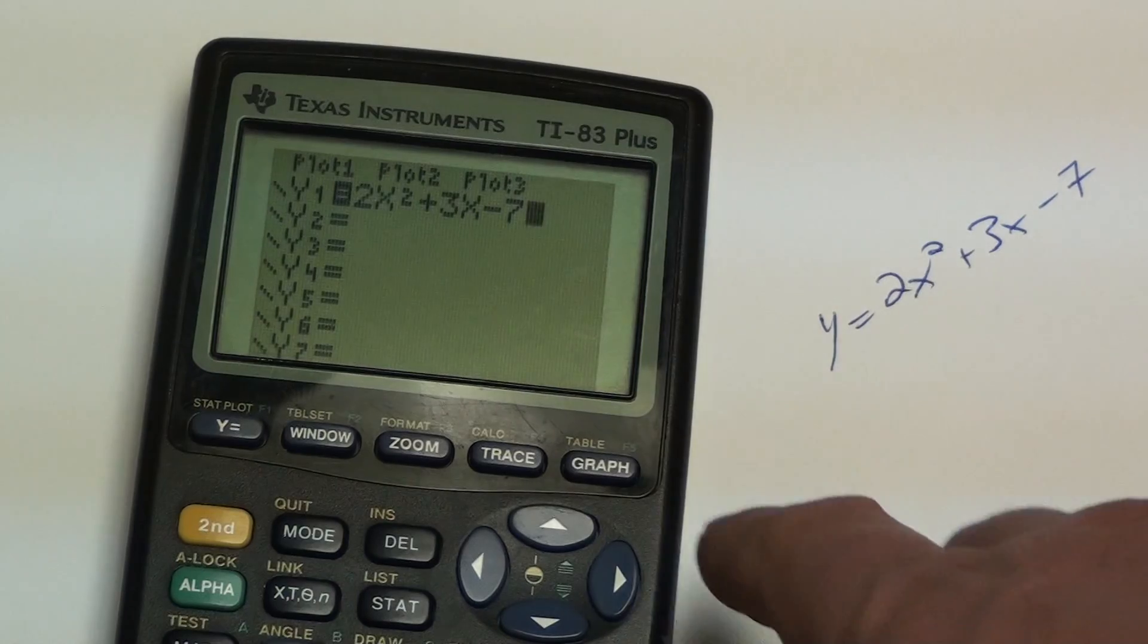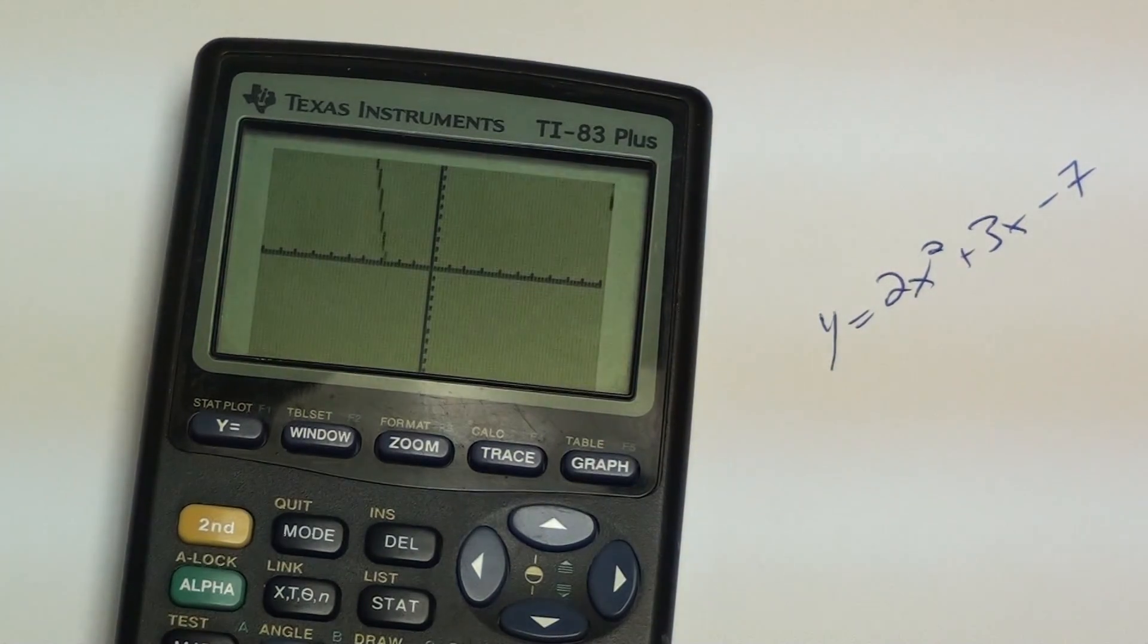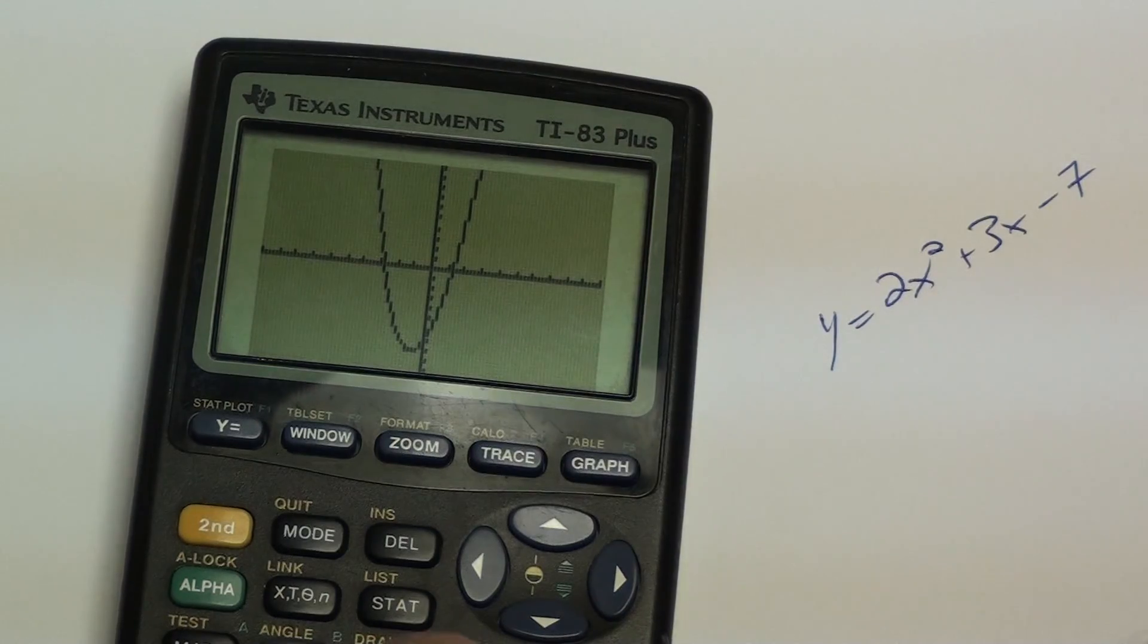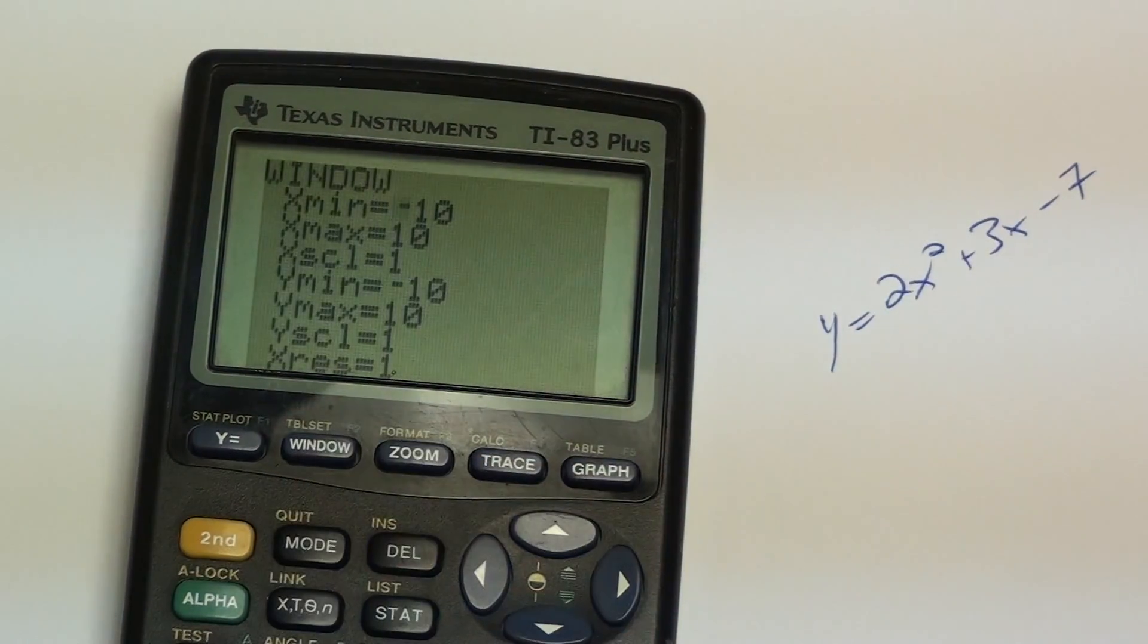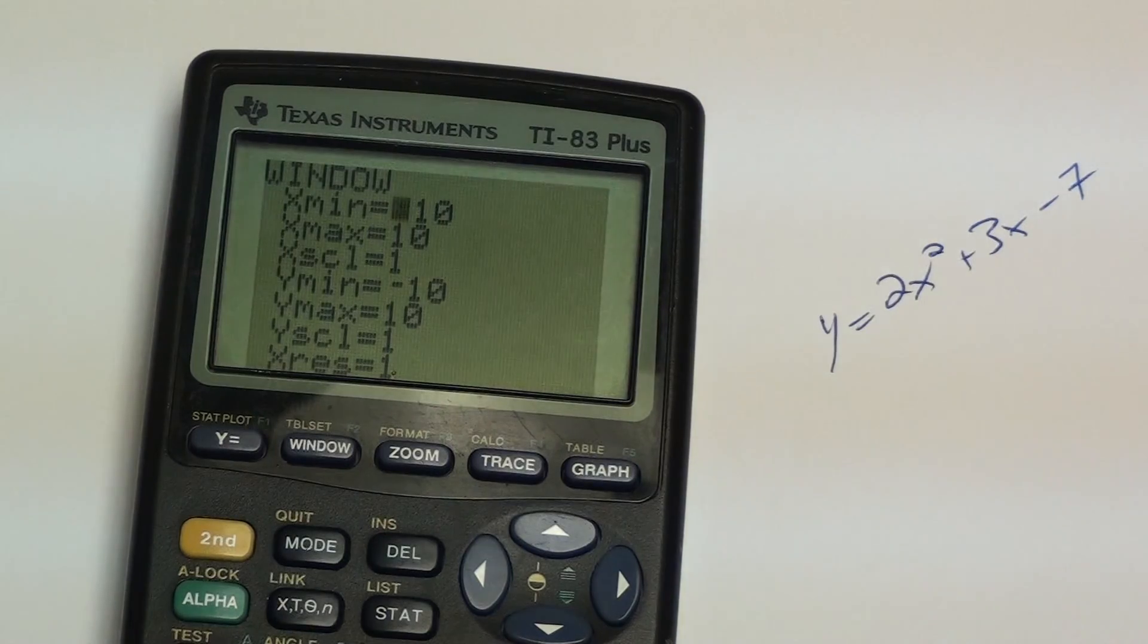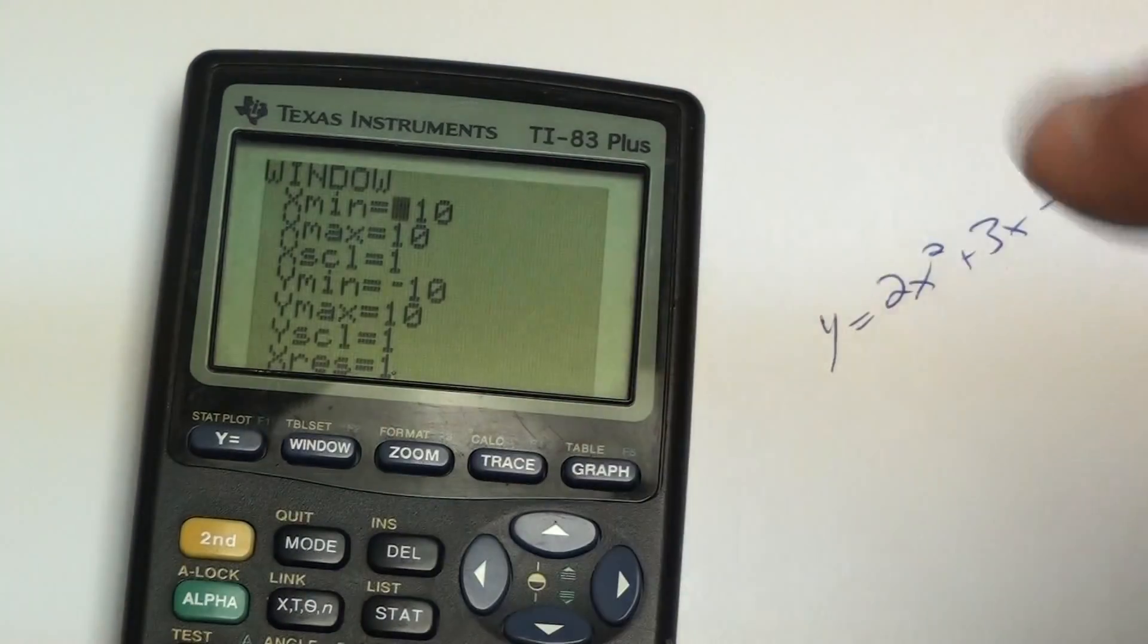And you're going to hit graph, and you should see your quadratic show up. If it doesn't show up, you might need to play around with the window feature.